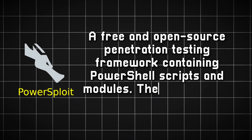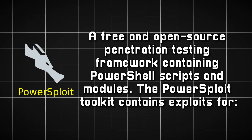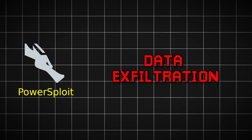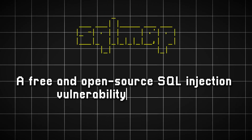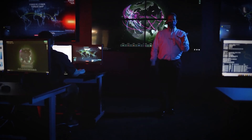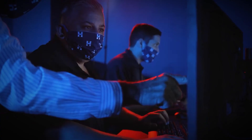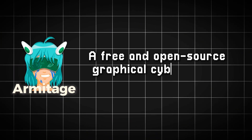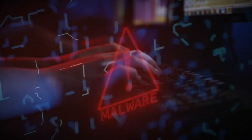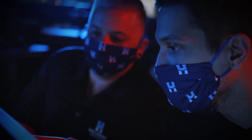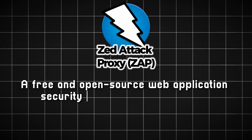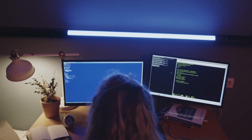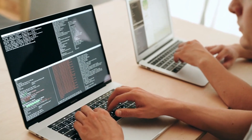PowerSploit, a free and open-source penetration testing framework containing PowerShell scripts and modules. The PowerSploit toolkit contains exploits for code execution, script modification, data exfiltration, and more. SQLMap, a free and open-source SQL injection vulnerability testing tool. SQLMap allows users to fetch data from a SQL database, access the underlying file system, and run operating system commands. Armitage, a free and open-source graphical cyber attack management tool. Armitage helps Red Team members visualize their targets and provides recommendations for exploits and attacks. OWASP ZAP (Zed Attack Proxy), a free and open-source web application security scanner and testing tool. ZAP provides features for automating web security and offers an extensive library of community add-ons.